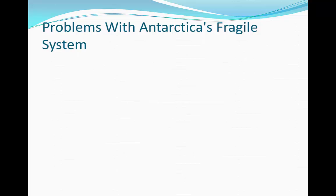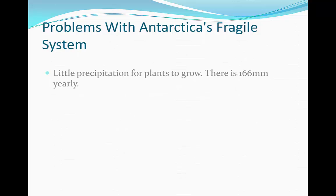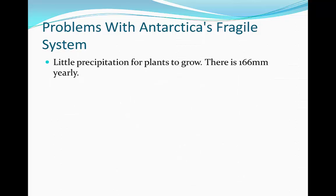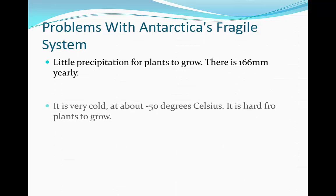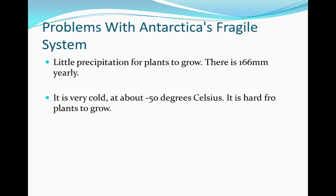Problems with Antarctica's fragile system. There's very little precipitation for plants to grow in — only 166mm yearly — and it's also very, very cold, about minus 50 degrees Celsius on average. On top of that, there's very little sunshine for plants to grow in. So we can assume from this that there is very, very little biodiversity in Antarctica.